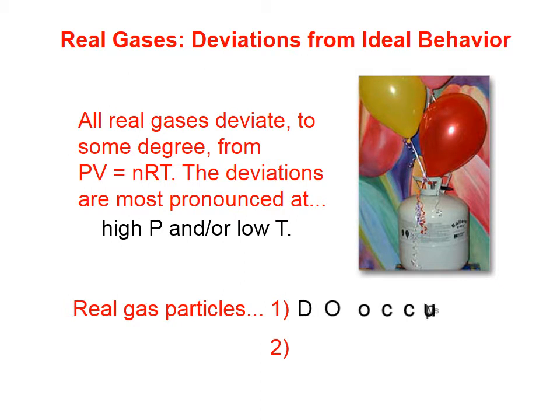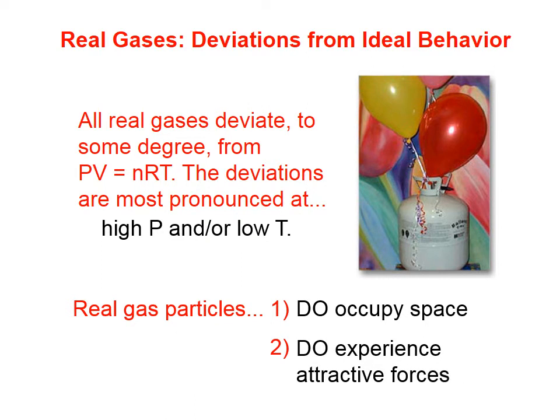Real gas particles, unlike the ideal ones that we've assumed, do occupy space. In other words, they don't have zero volume. They do have some measurable volume. It's tiny, but it is measurable. Furthermore, real gas particles do experience attractive forces. Those attractive forces become significant when, at high pressures, those particles are very close together, and at low temperatures, when they're moving very slowly, then those attractive forces start to play a noticeable role.